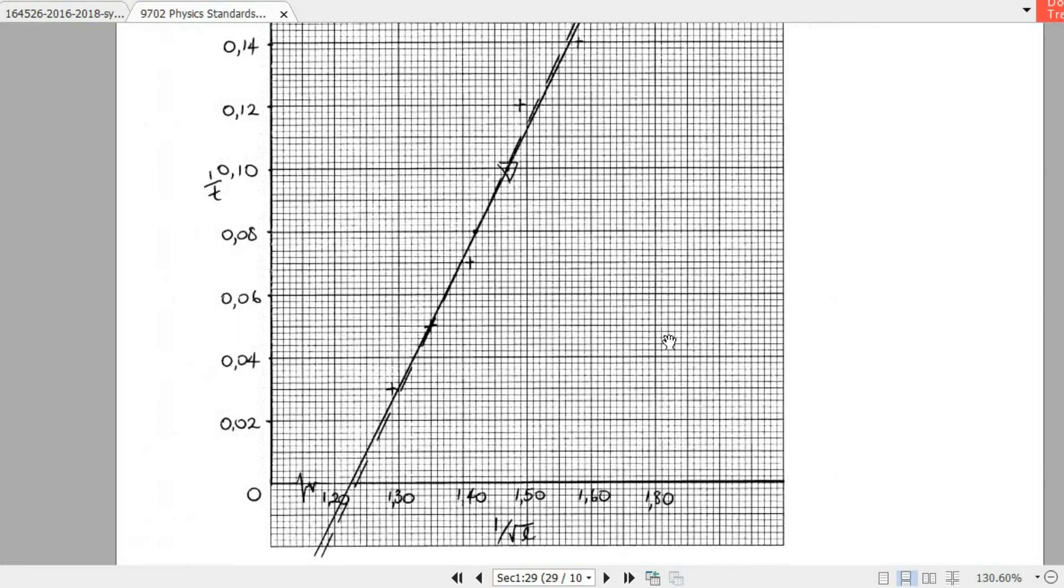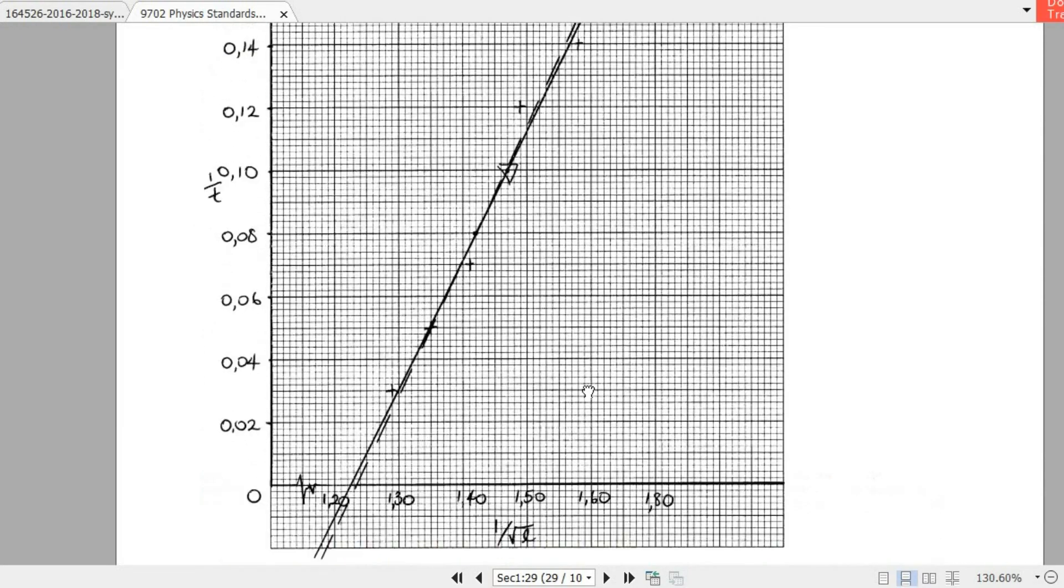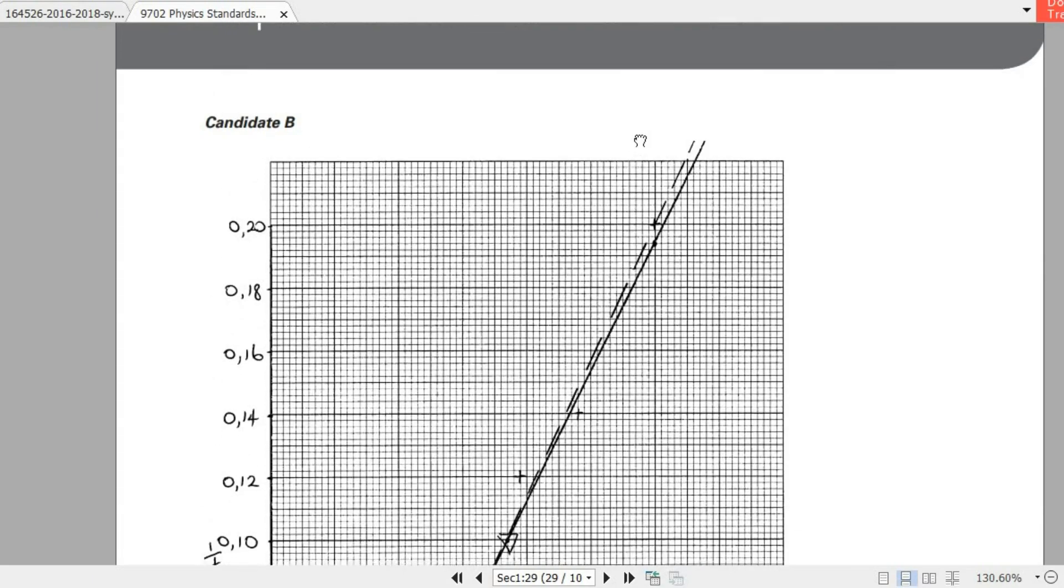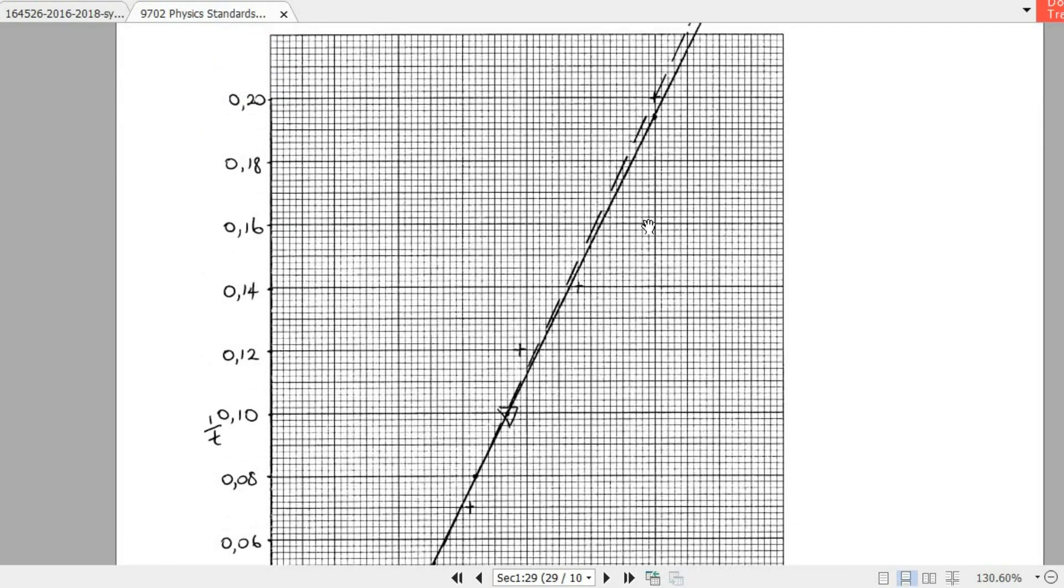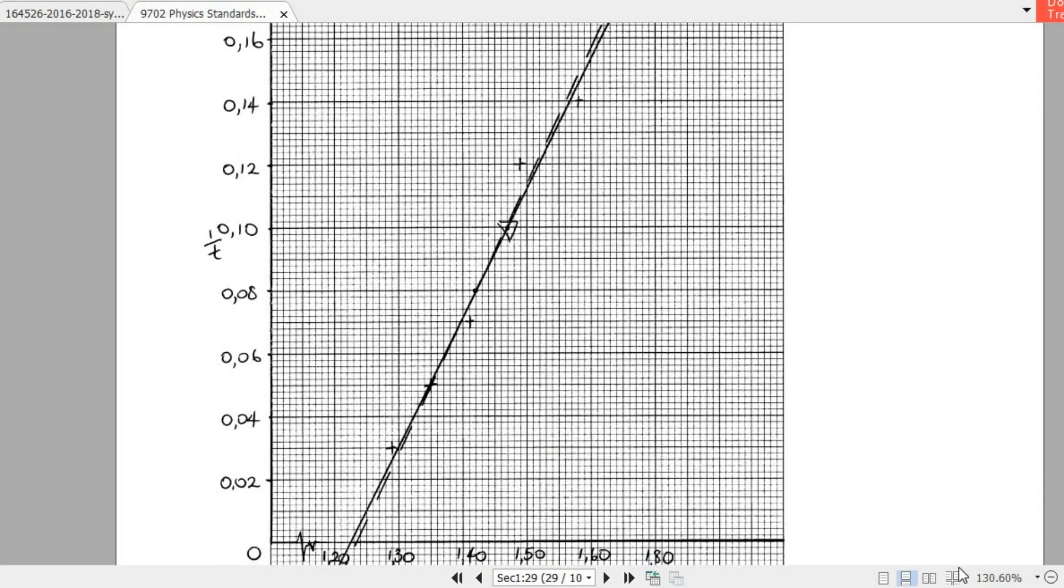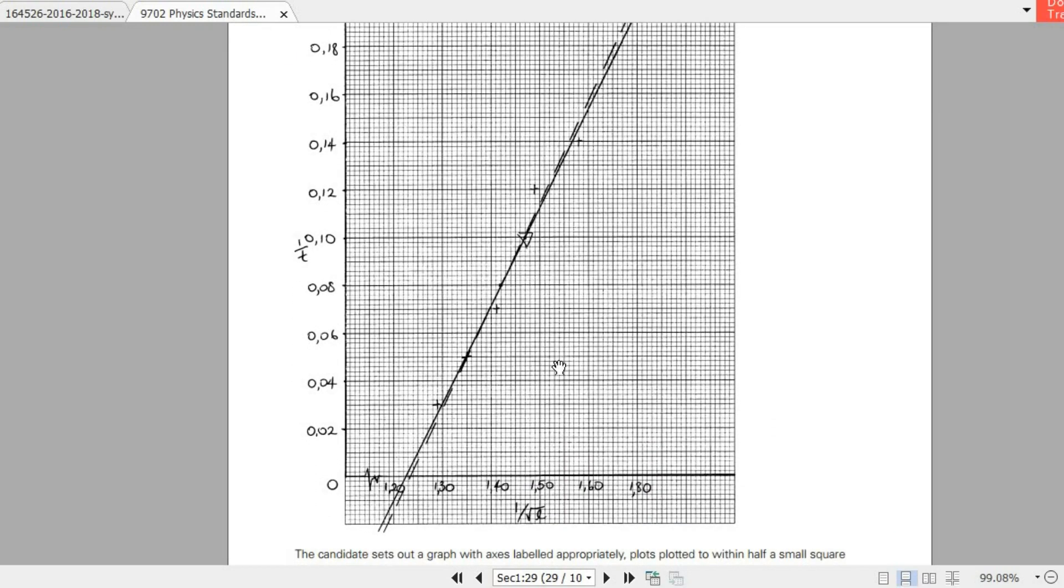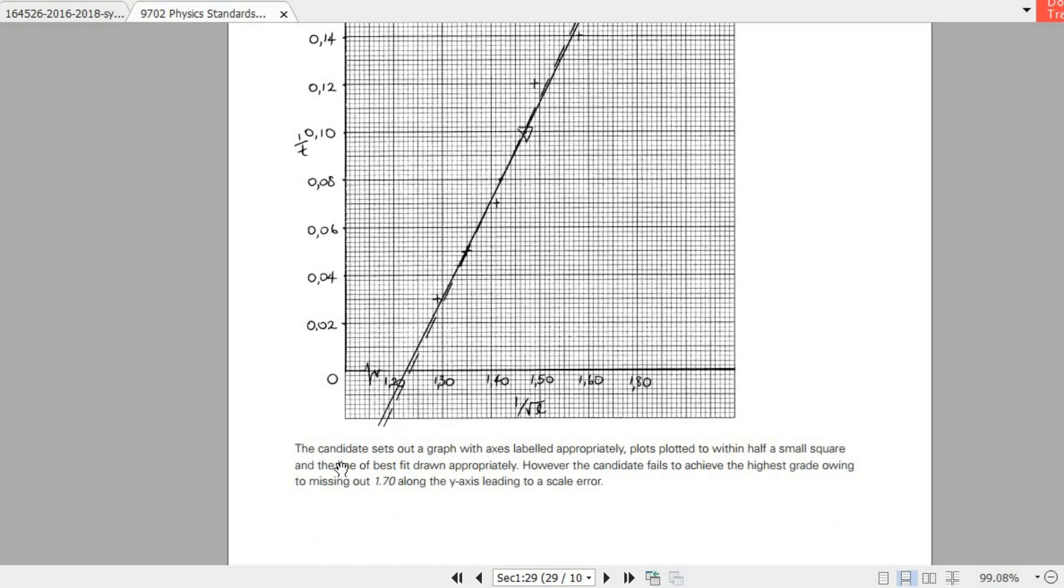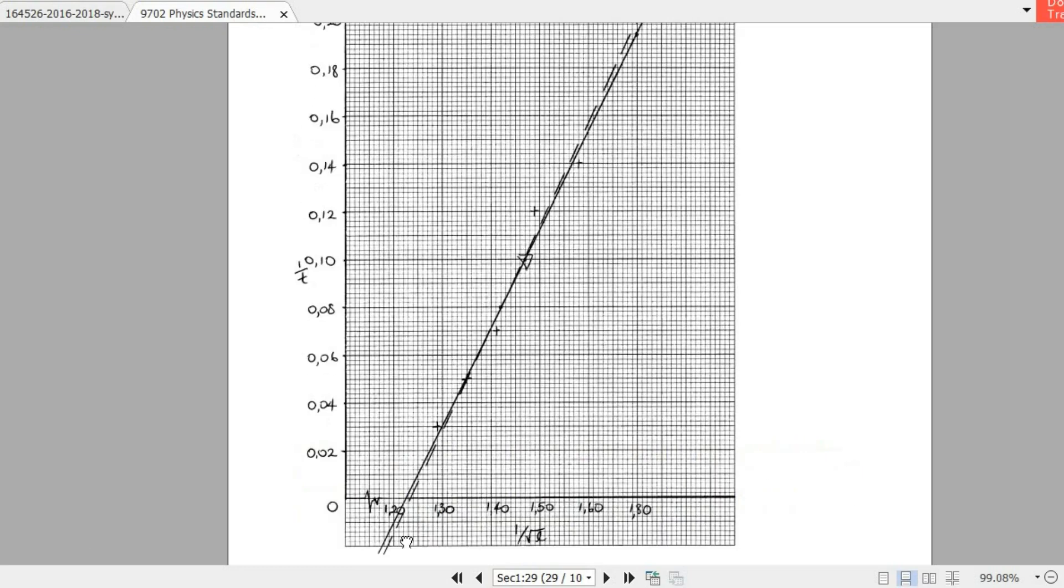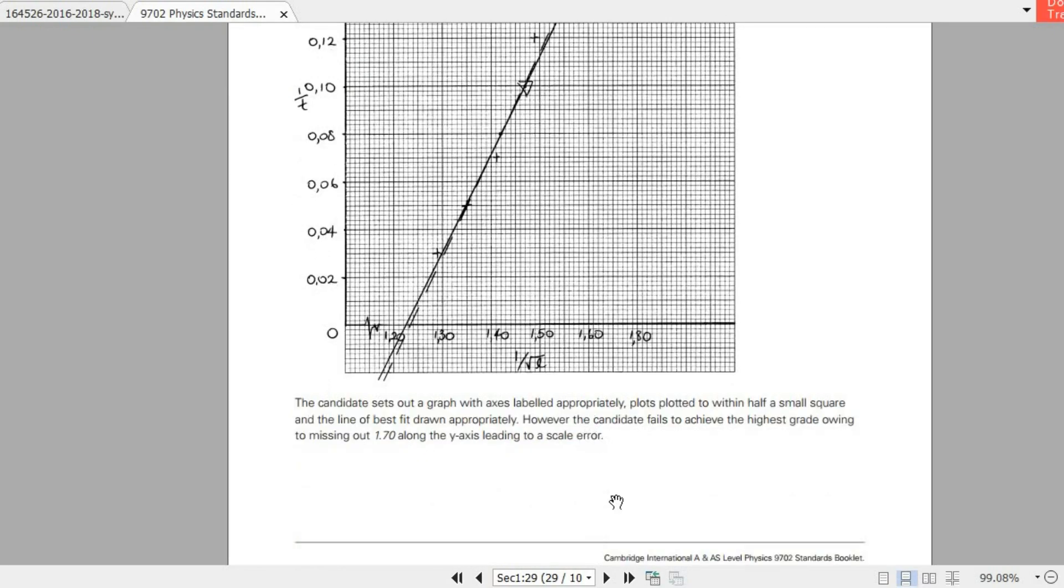Second is a grade B student. What sort of graph he drew? He gave a discontinuity and half a small square. A couple of his plots are all right. He didn't use a gradient triangle. And the best fit line is not exactly steep enough. It has to be steeper. Labeling is all right, but it's still a B grade graph. He actually missed out 1.5, 1.6, and 1.8. He didn't even put 1.7 properly. That's why he lost a mark here.